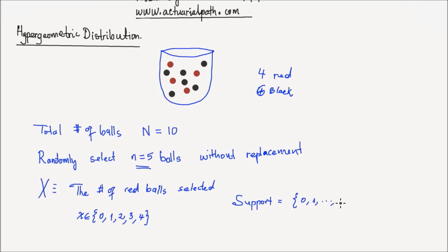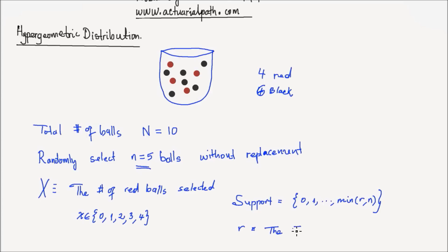So the support of this random variable x is the set containing the values 0, 1, 2, 3, 4 — up to the minimum of either r, the number of red balls in the urn, or little n, the number in your sample.